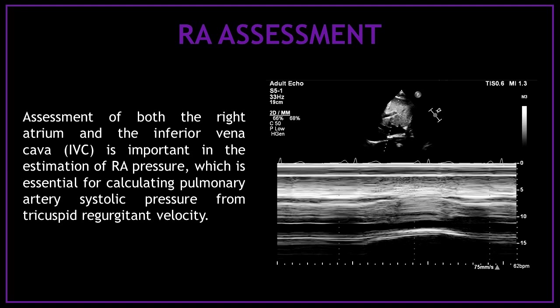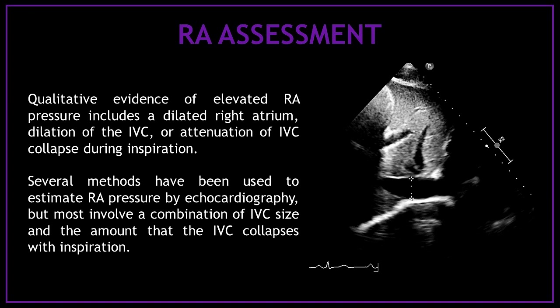Assessment of both the right atrium and the inferior vena cava is important in the estimation of right atrial pressure, which is essential for calculating pulmonary artery systolic pressure from tricuspid regurgitant velocity. Qualitative evidence of elevated right atrial pressure includes a dilated right atrium, dilation of the inferior vena cava, or attenuation of inferior vena cava collapse during inspiration.